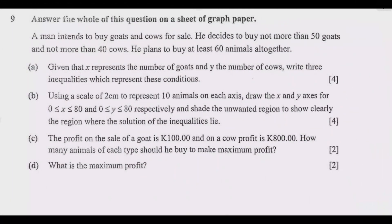Let us look at question 9. Answer all of this question on a sheet of graph paper. A man intends to buy goats and cows for sale. He decides to buy not more than 50 goats and not more than 40 cows. He plans to buy at least 60 animals altogether. Question A: Given that x represents the number of goats and y the number of cows, write three inequalities which represent these conditions.